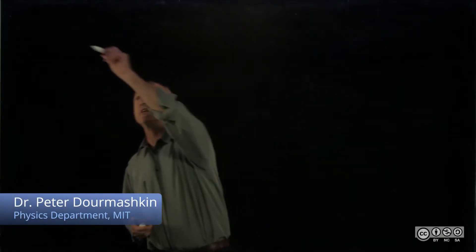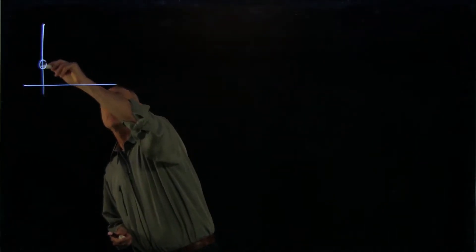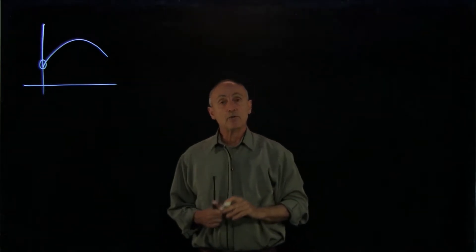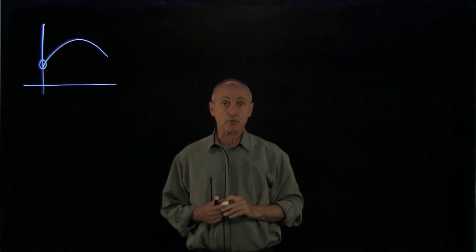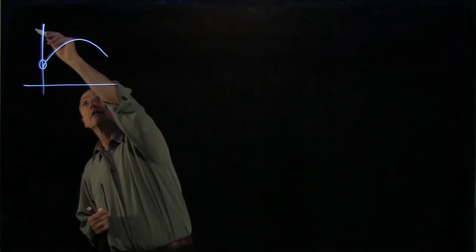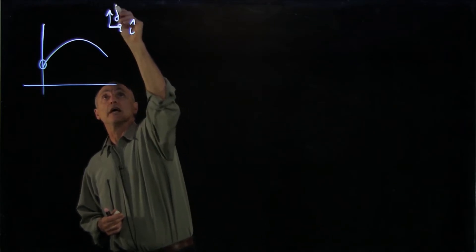One of the most common motions we see in our everyday lives is the path of an object thrown and moving through space. This type of motion has a very famous name called projectile motion. When we look at it, let's introduce a coordinate system, i-hat and j-hat.